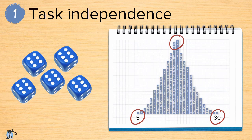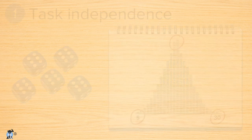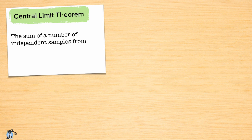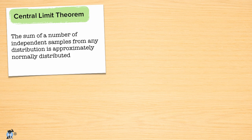What I find interesting is that we're going to see this same shape even if some of our dice are loaded and always roll the same values. This is because of something called the central limit theorem. The central limit theorem says that the sum of a number of independent samples from any distribution will be approximately normally distributed.